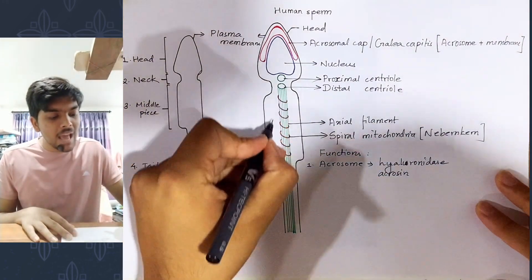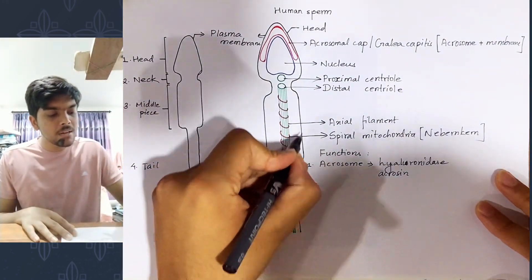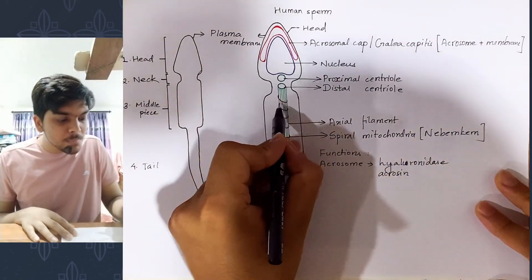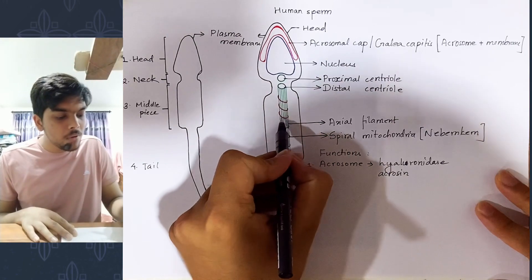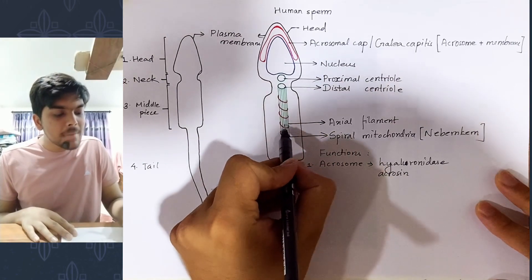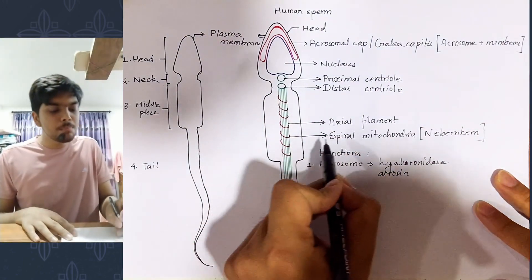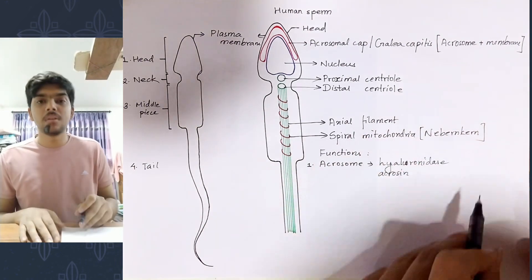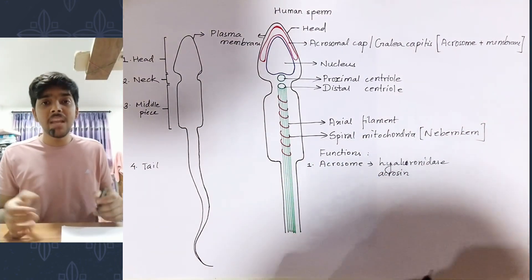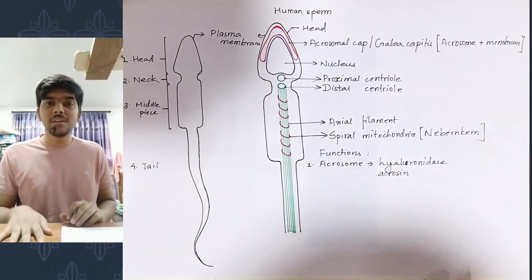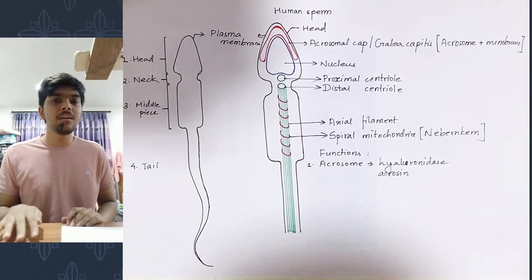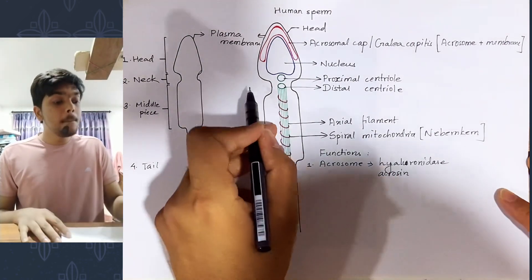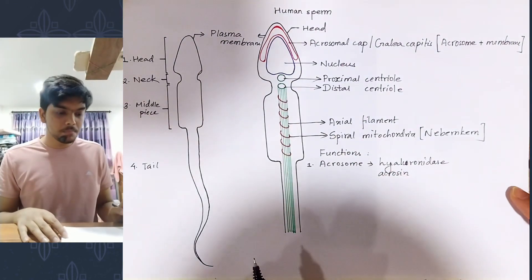The portion of the axial filament that is present within the middle piece is wrapped spirally with the help of mitochondria. This spiral mitochondria is called the nebenkern. It has been given a special name — nebenkern — and it is the spiral mitochondria present within the middle piece of the human sperm.